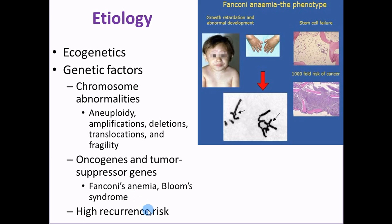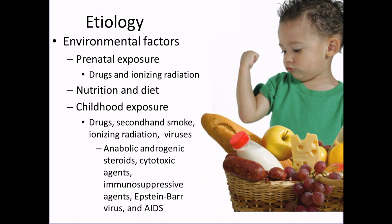These disorders have high recurrence risk because the gene is carried within a small ethnic population. With Bloom syndrome, about one in every 100 Ashkenazi Jewish descendants will have it. If two carriers meet and reproduce, the risk is much higher — a concept called consanguinity, meaning close relatives sharing genetic traits.